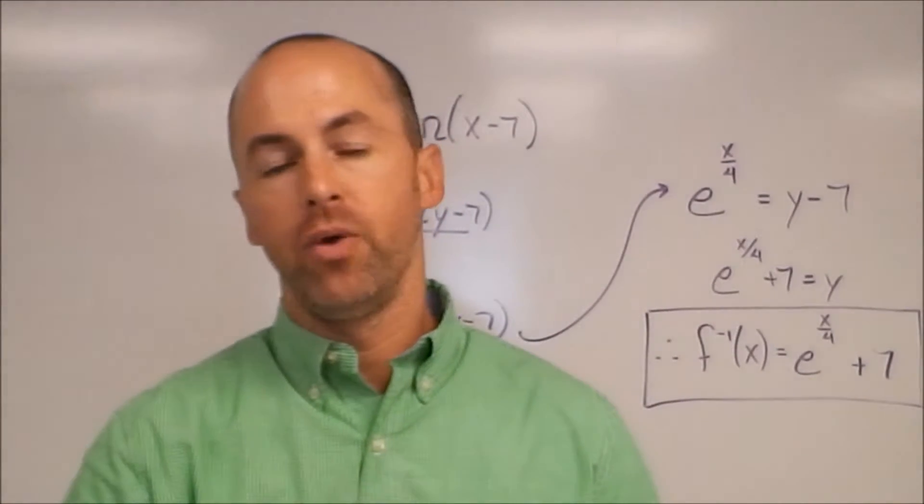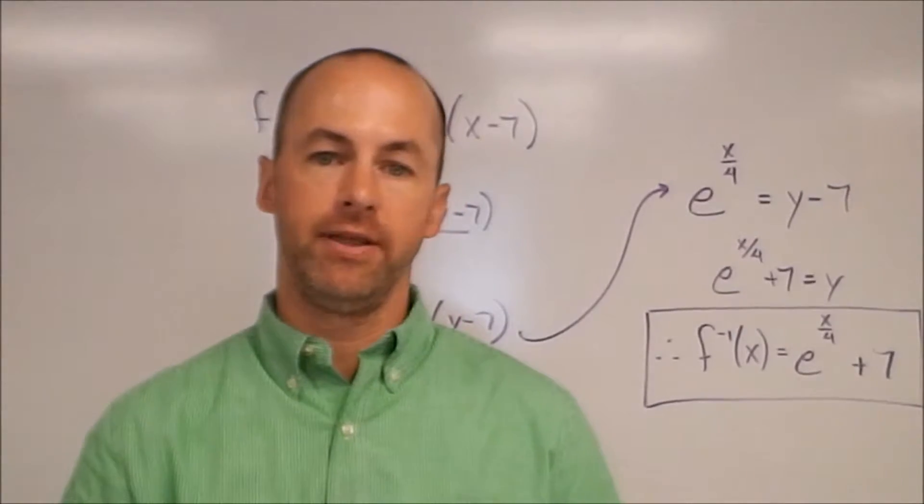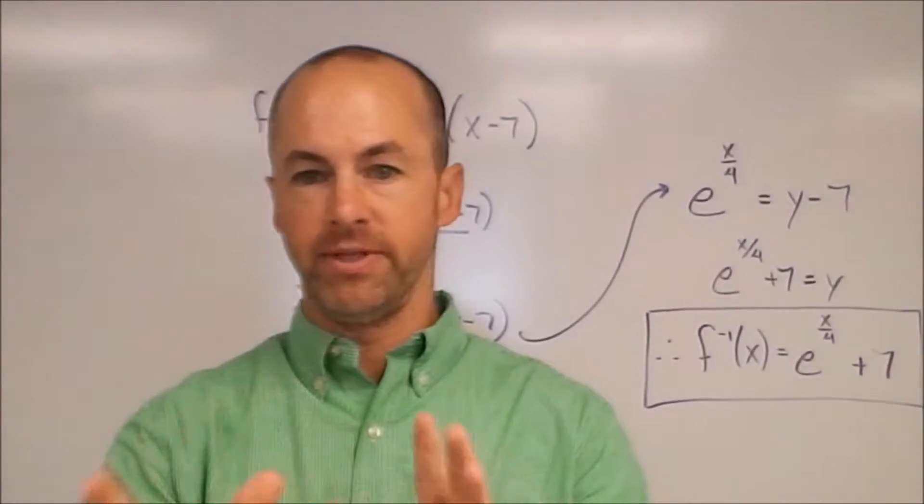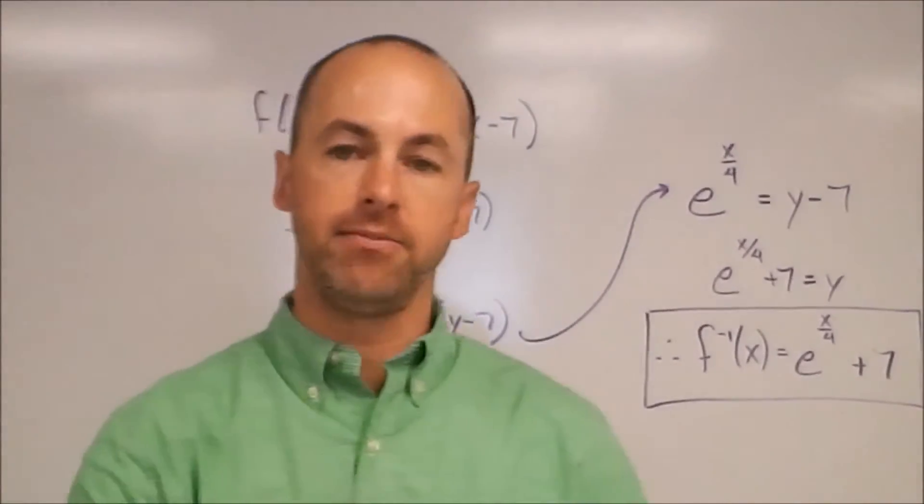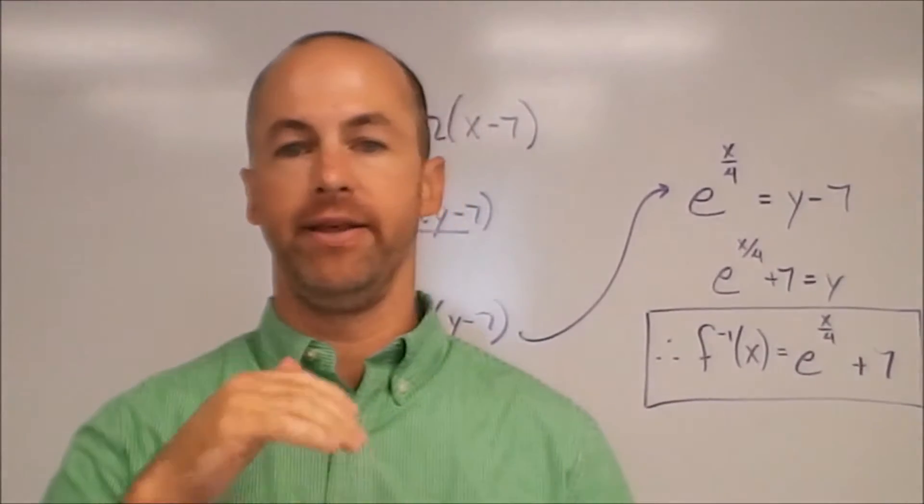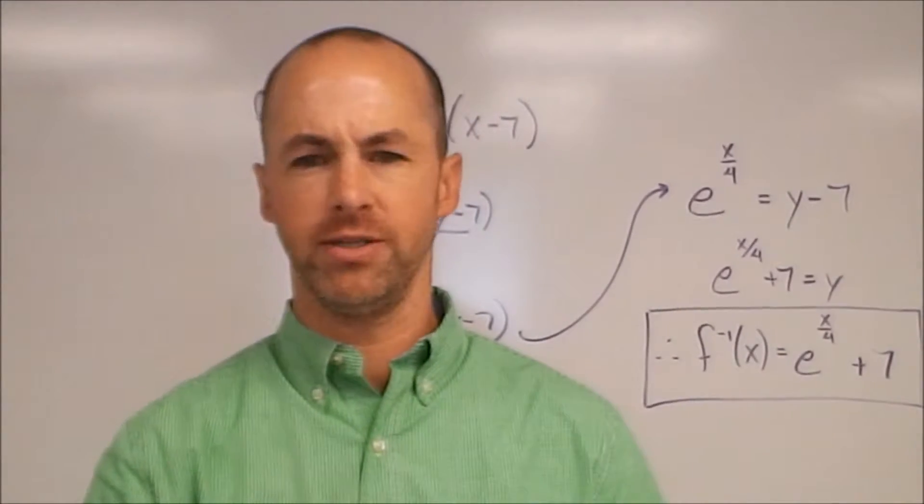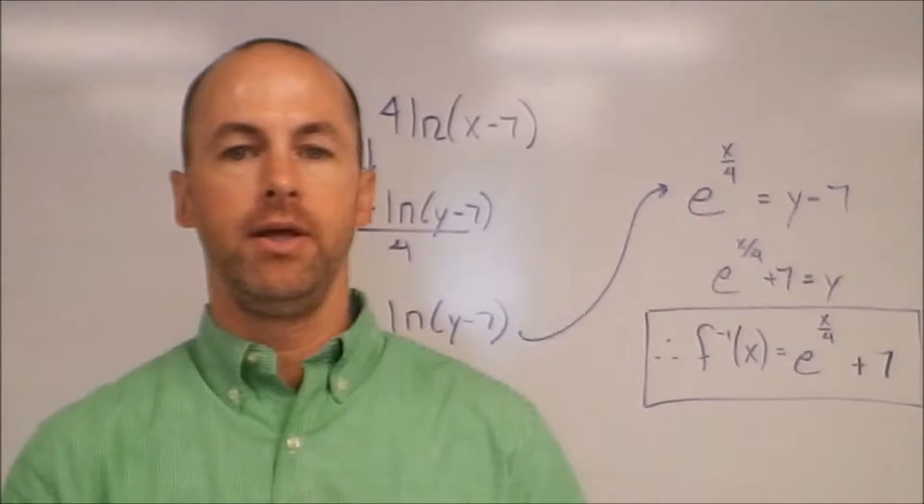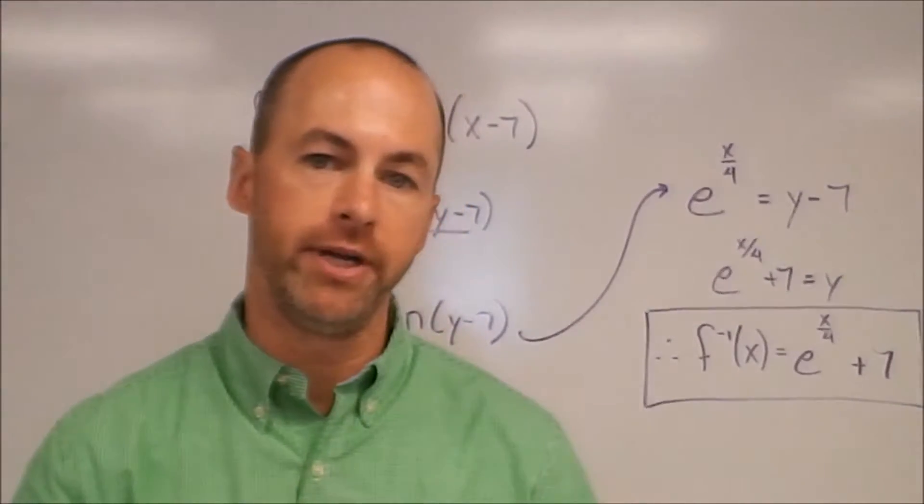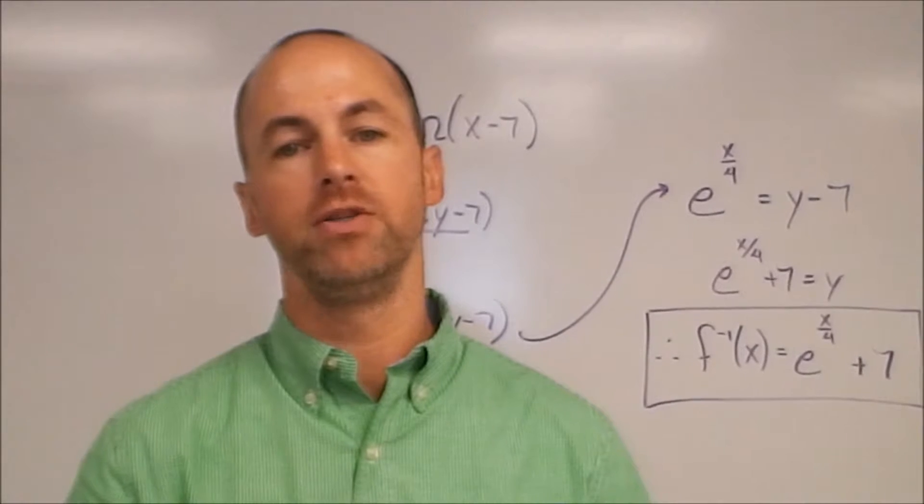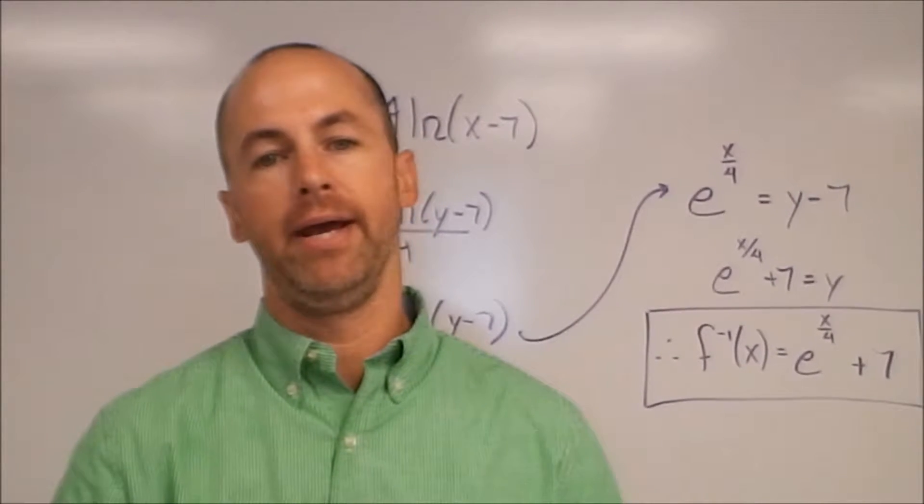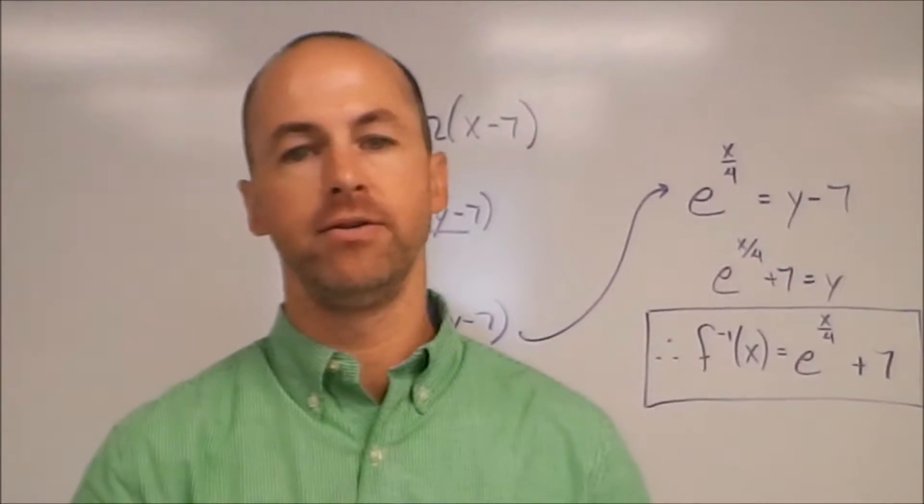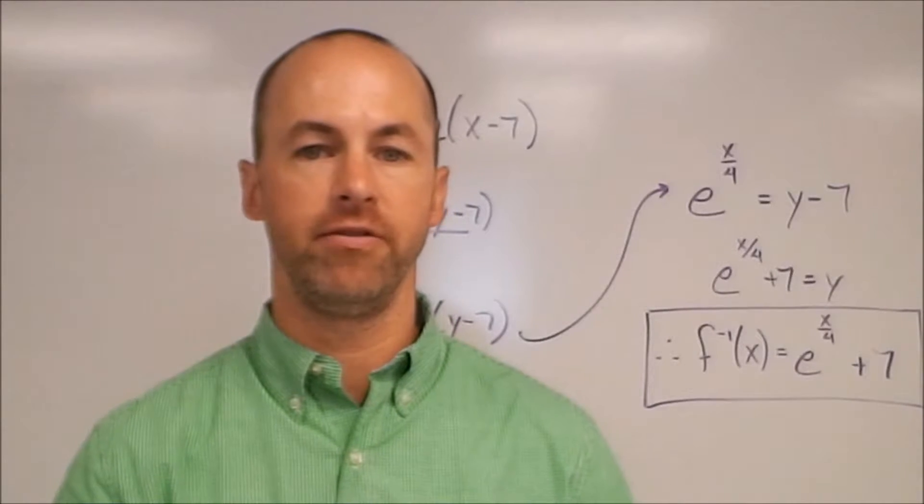In regular calculus, grades will be given by categories. That means assignments will be broken up into different groups. The groups will be tests and projects, quizzes, and then homework and classwork. Tests and projects will count for 70% of the final grade. Quizzes count for 20% of the final grade, and homework and classwork will combine to account for 10% of the final grade.